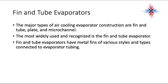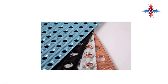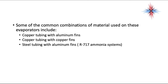The majority of air-cooled evaporator constructions are fin and tube, plate, and micro-channel. The most widely used and recognized is the fin and tube evaporator. Fin and tube evaporators have metal fins of various styles and types connected to the evaporator tubing. Common material combinations include copper tubing with aluminum fins, copper tubing with copper fins, and steel tubing with aluminum fins. More and more you'll also see aluminum tubing with aluminum fins, because aluminum has much better rates of heat transfer than copper.